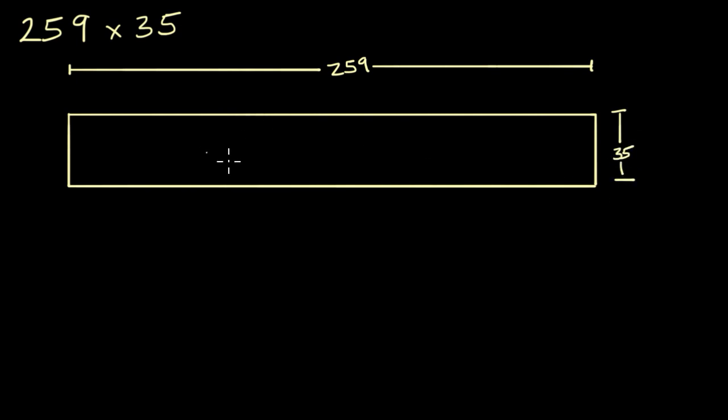Well, then the area of this rectangle would be 259 times 35, whatever that product is. Now, why am I even talking about this? Why is this useful? We can actually break up 259 into 200 plus 50 plus 9 and think about those chunks of the area, and do the same thing for 35.